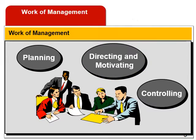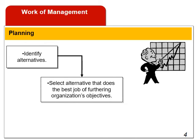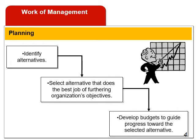All managers carry out three major activities: planning, directing and motivating, and finally controlling. Planning involves selecting a course of action and specifying how the action will be implemented. The first step in planning is to identify the various alternatives. Next, the alternative that does the best job of furthering the organization's objectives is selected. Management's plans are usually expressed in budgets.